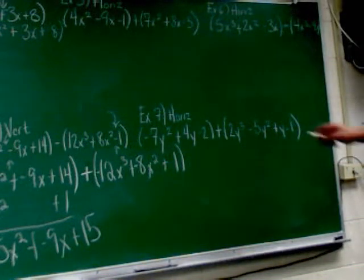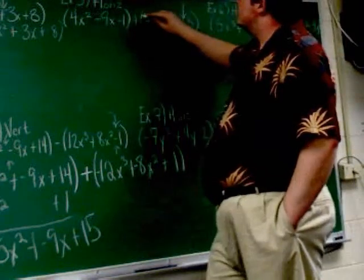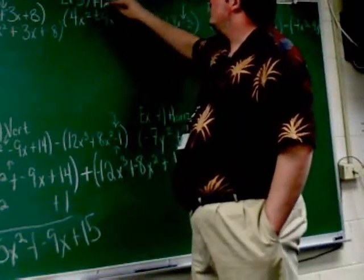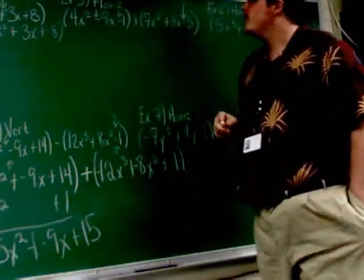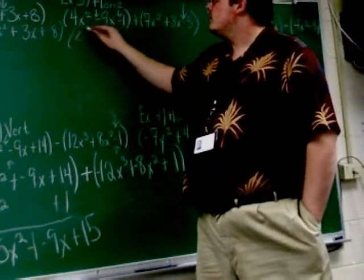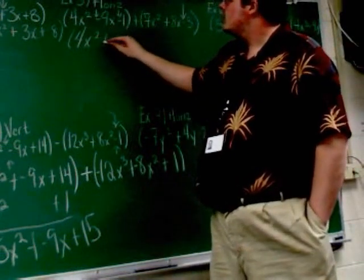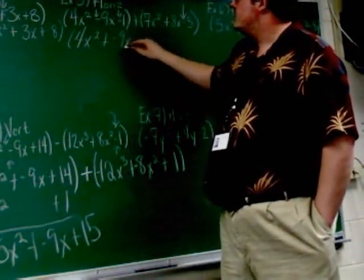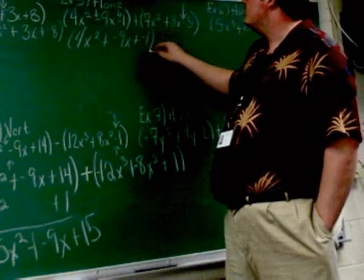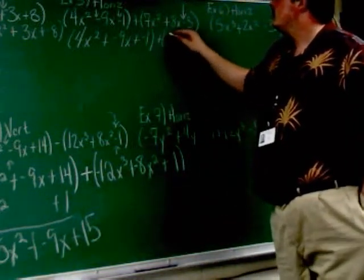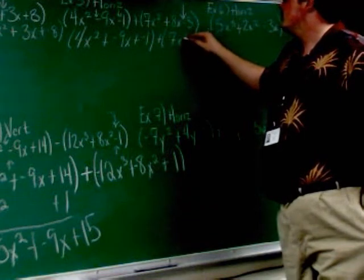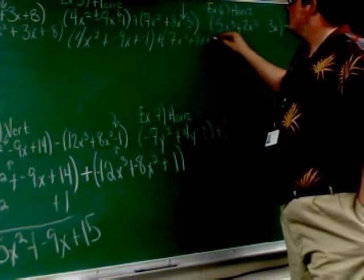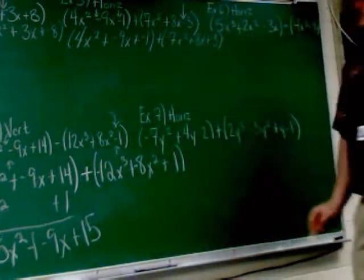It does have subtraction signs, though. So it's got this one here, this one here, this one here. So rewrite 4x squared, plus negative 9x, plus negative 1, plus 7x squared, plus 8x, plus negative 3.